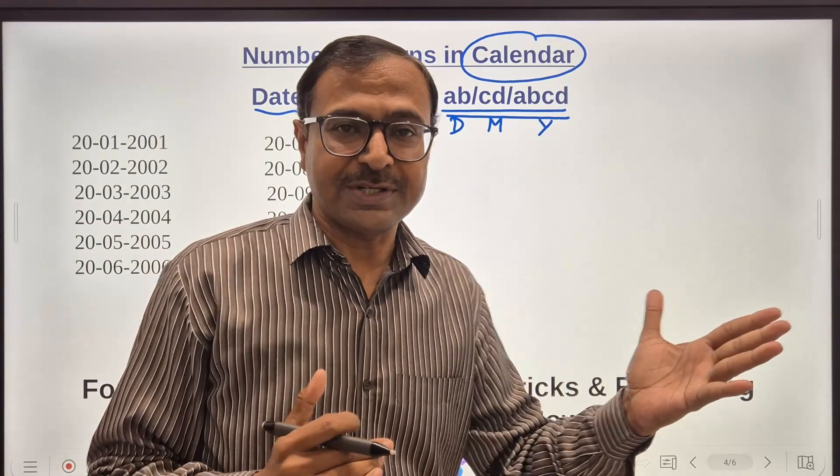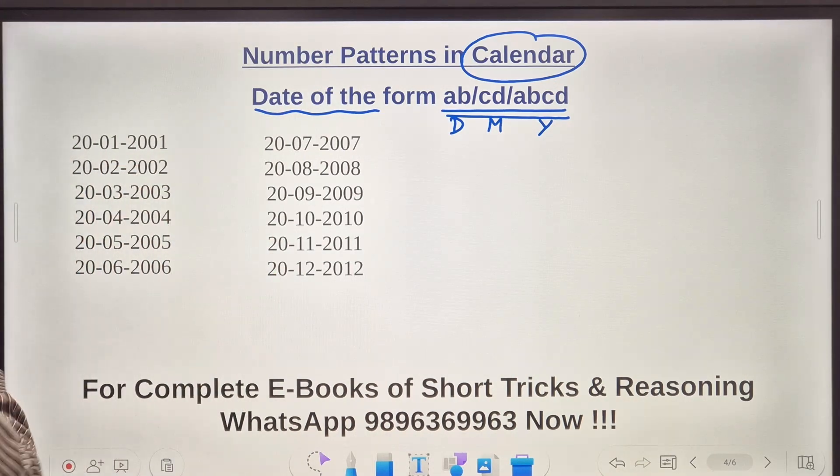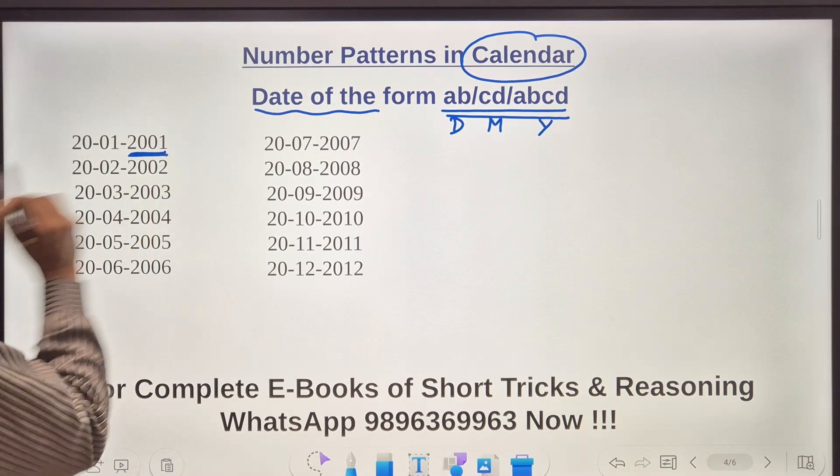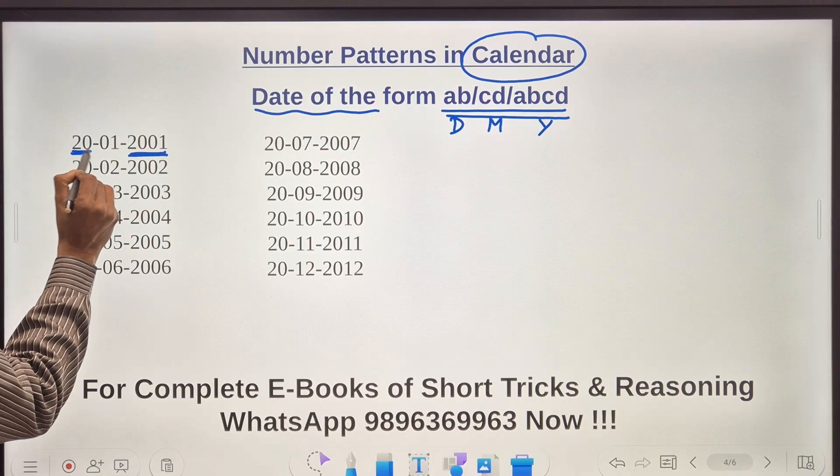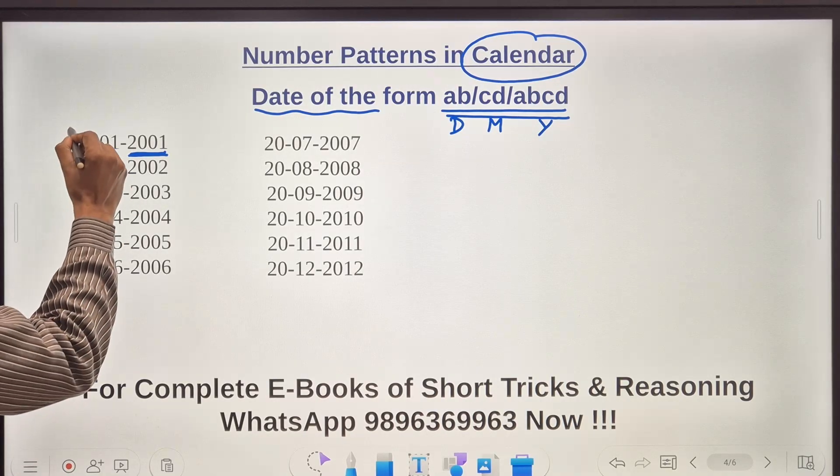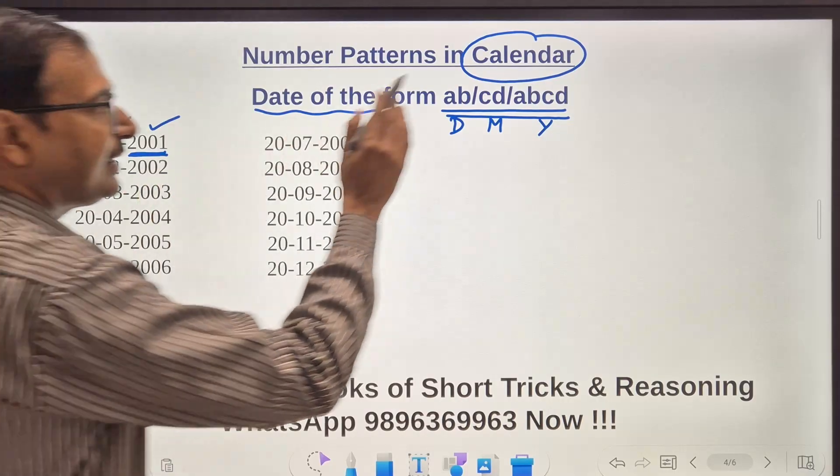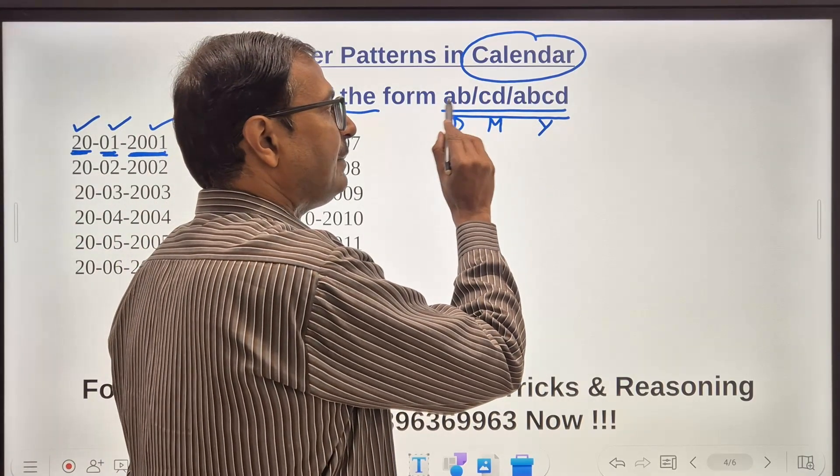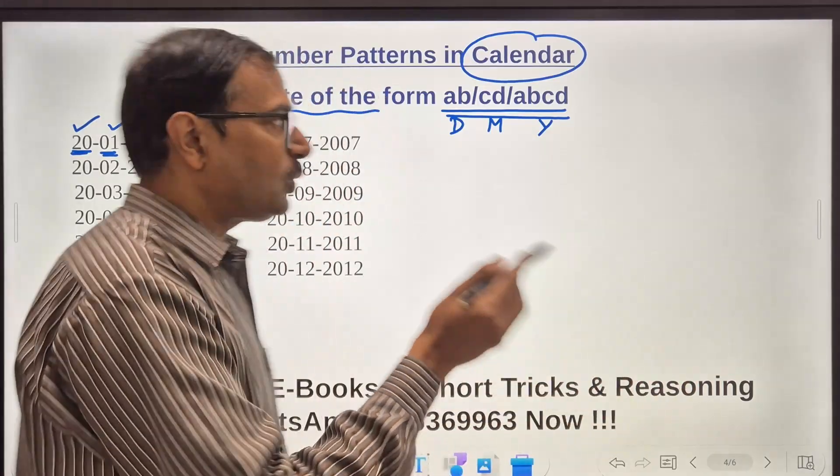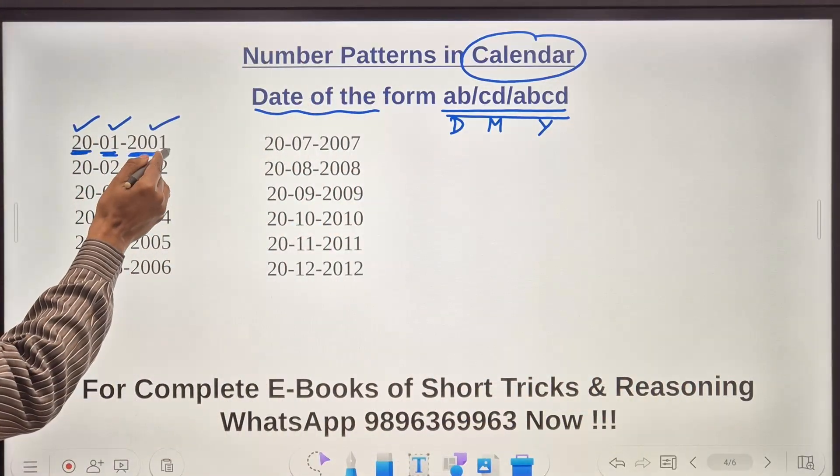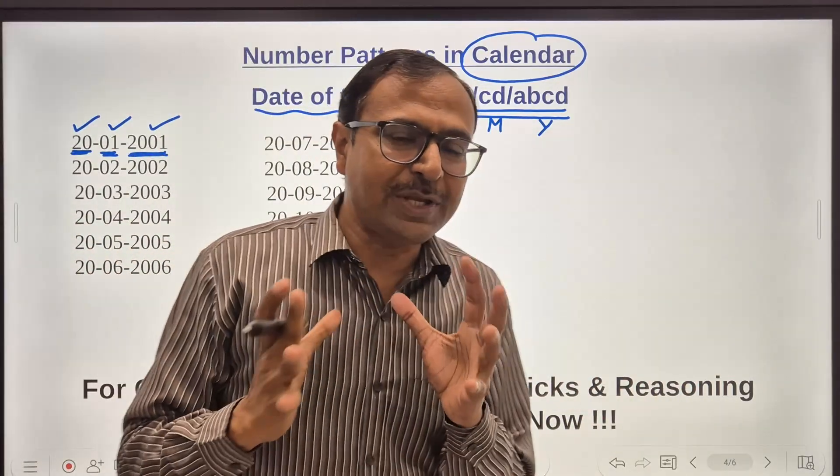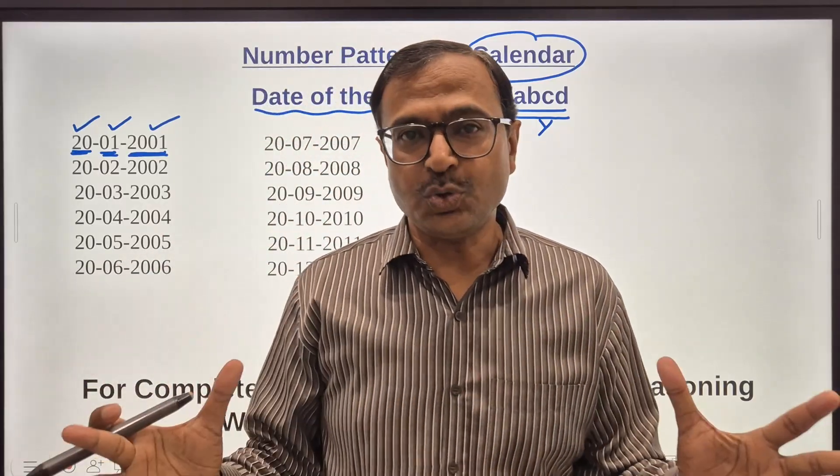So if I tell you some of them I have taken only the 21st century like the years which come after 2000. So after 2000, in 2001, see 2001 is the year, so 20 date and 01 month. That means 20th January 2001 gave us a date in this form AB/CD/ABCD.